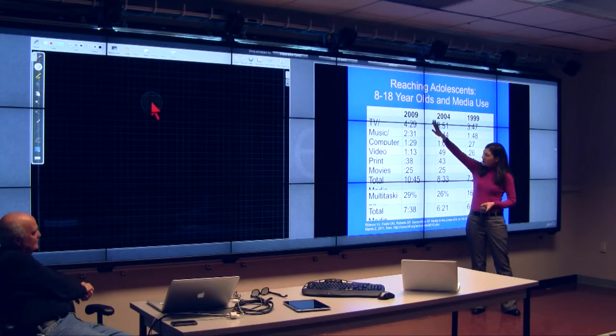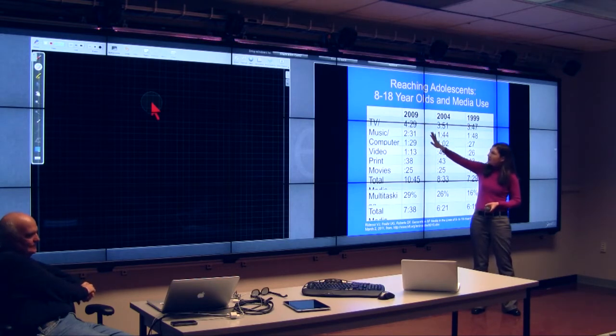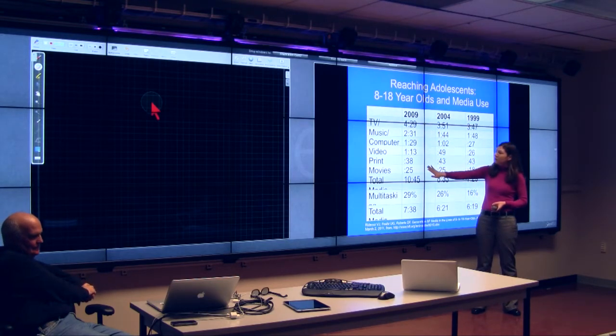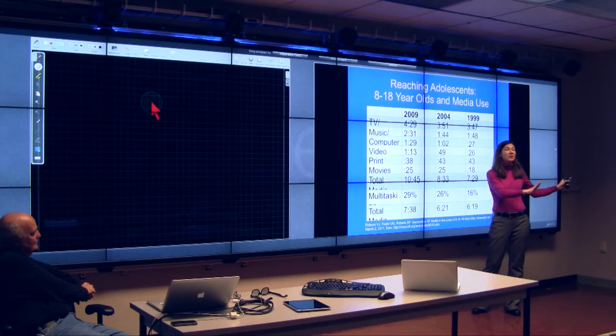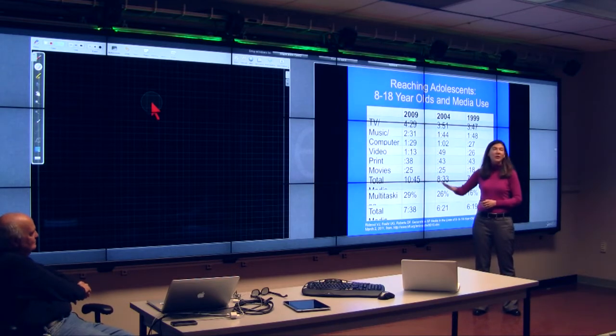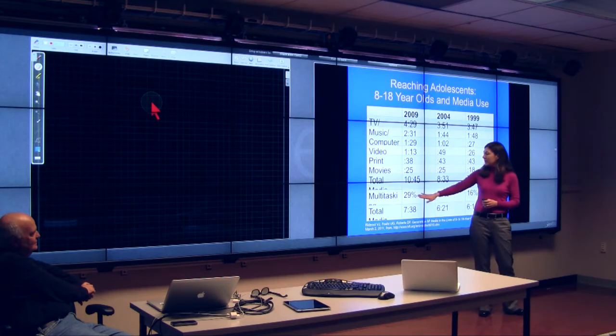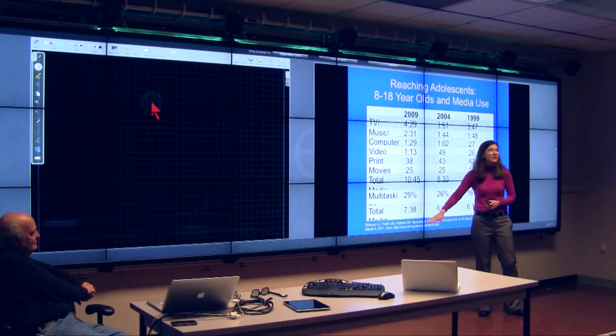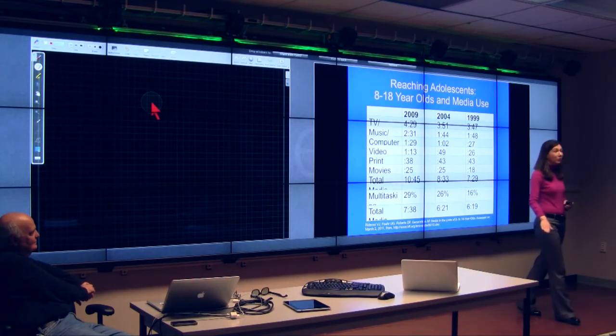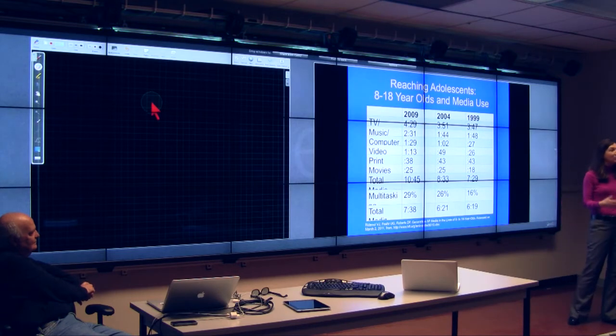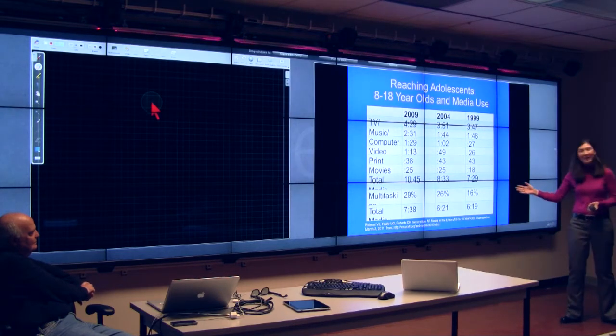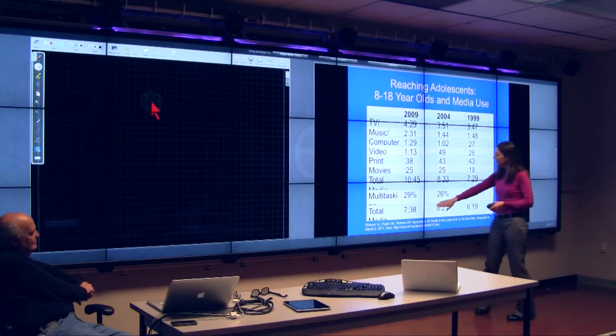In 2009, if you add up all these numbers, TV, music, computers, video, print, movies, not even counting the additional hour to hour and a half on texting and talking on the phone, adolescents spend 10 hours and 45 minutes using media. Now, if you account for multitasking, they're multitasking 29% of the time, so 7.38 hours a day with media. A lot of people work an eight-hour day, but they spend this amount of time a day with media.